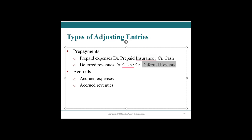The second broad category of adjusting entries is accruals — accrued expenses and accrued revenues. This is for when the cash transaction does not match the economic reality. For example, we have a contractor staining our back deck and porch. They're about halfway through, and in a couple of days they'll be done, but they won't have invoiced us yet. We still need to record that staining expense.